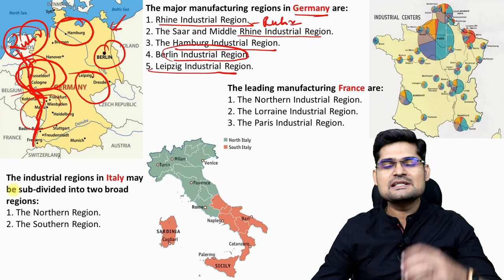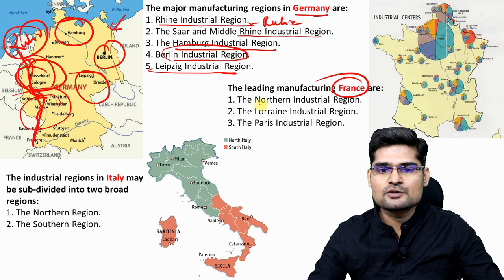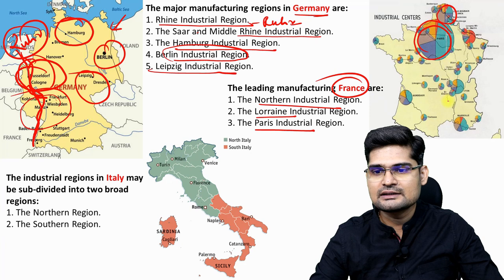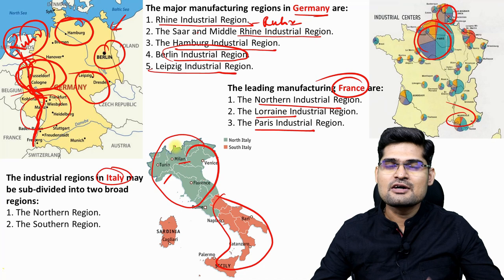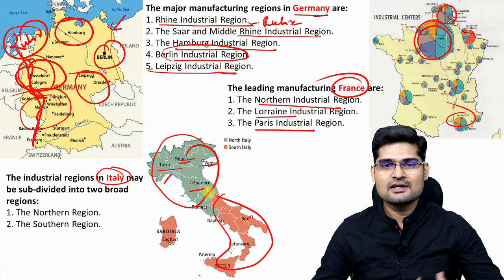In France, the major hubs are Northern France, Lorraine, and Paris — with Paris being the largest. In Italy, there is a clear North-South divide: the Northern region is famous for fashion and technology — Milan, Turin, Venice, Florence — while Southern Italy has other industrial areas. These are the two major blocks in Italy.